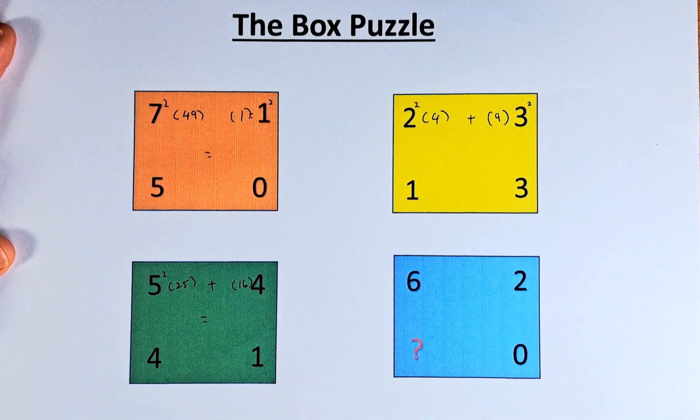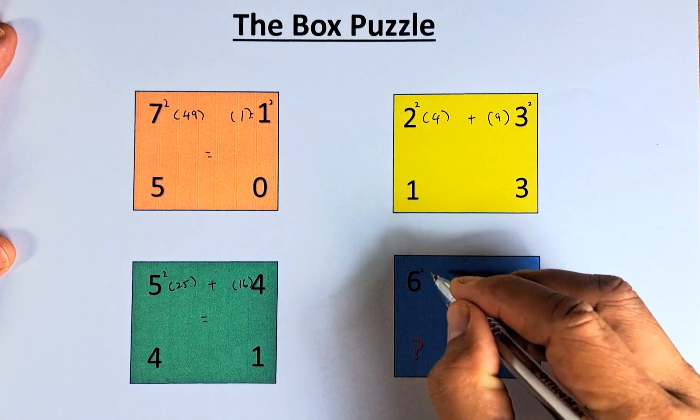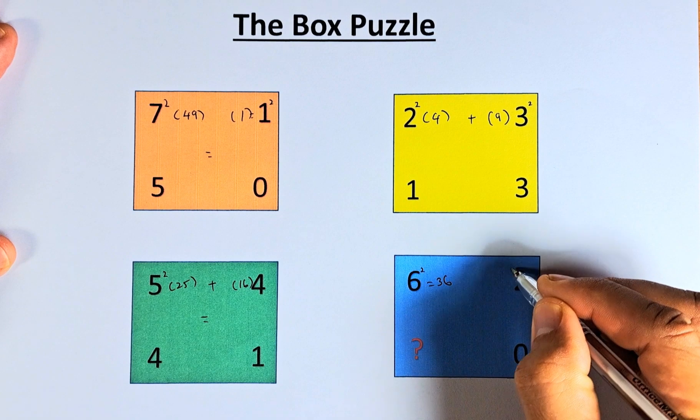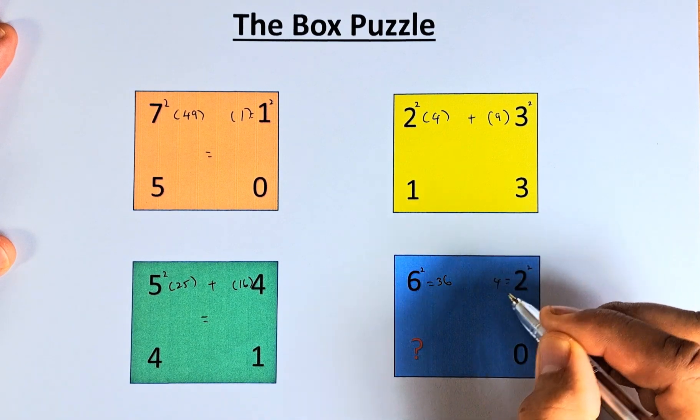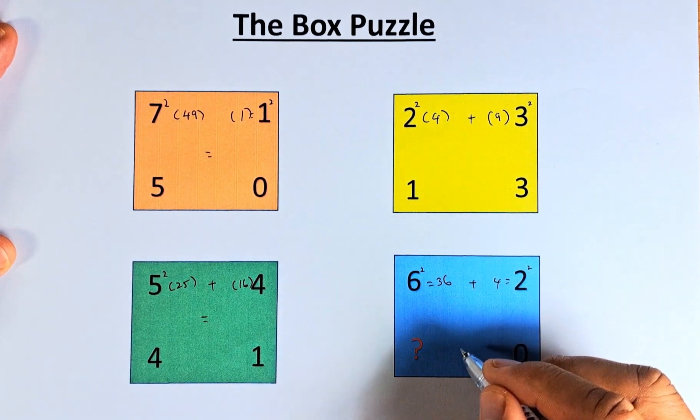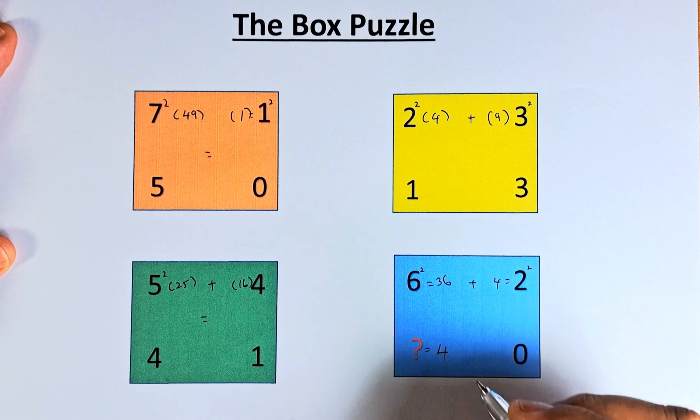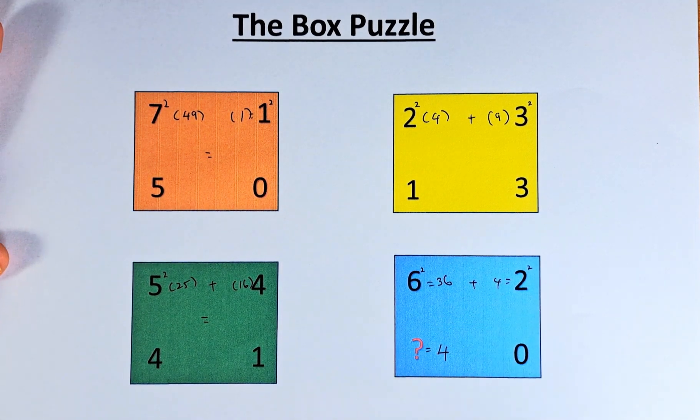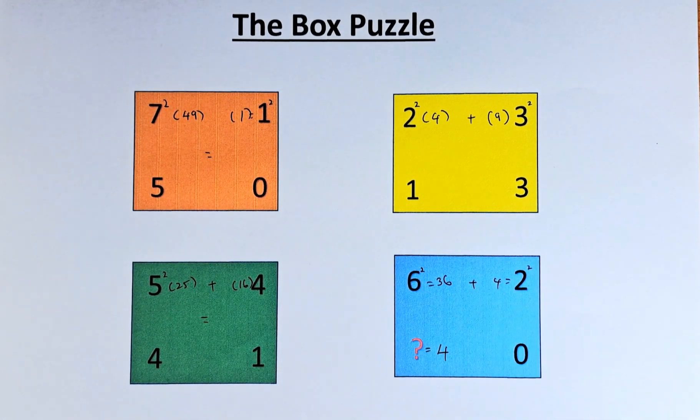In the last box, which is the blue box, we have 62?0. So 6 squared is 36, 2 squared is 4, and 36 plus 4 equals 40. So the question mark equals 4, because 40 equals 40.